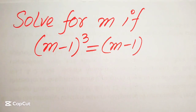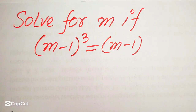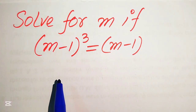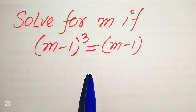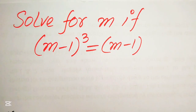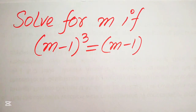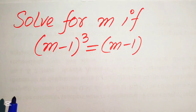Hello everyone, welcome to solve this nice math Olympiad algebra problem. Here we have (m - 1)³ = m - 1, and we solve this problem for the values of m only.